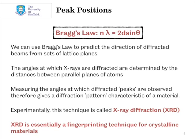We can use Bragg's law to predict the direction of diffracted peaks from sets of lattice planes. So we could work out the d-spacing of that (213) plane and substitute it into Bragg's law as d. That would tell us the angles at which x-rays will be diffracted from that plane.